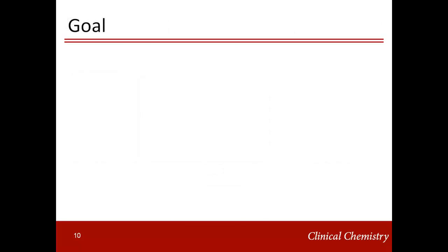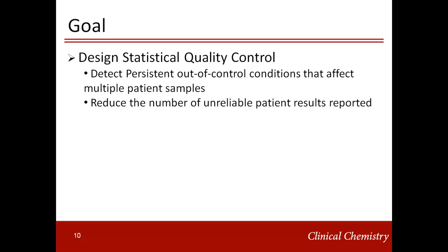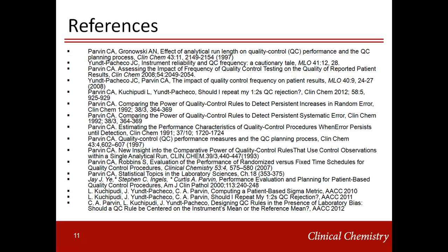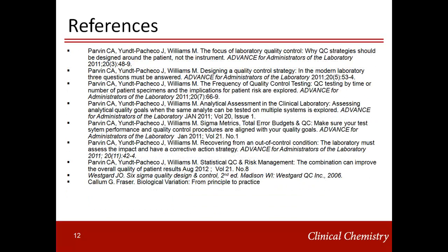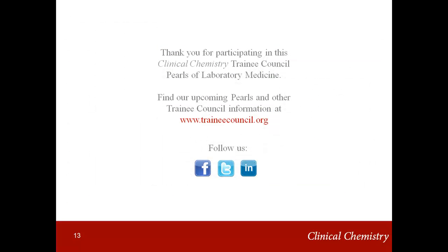Our goal in subsequent pearls is to learn to design statistical quality control to detect persistent out-of-control conditions that affect multiple patient results and reduce the number of unreliable patient results reported. Our main focus will be to minimize patient risk. Here are the references for all the articles used in this series. Thank you for joining me on this Pearl of Laboratory Medicine on Why Do We Need Quality Control from the QC Design Things You Need to Know series. I am Lakshmi Kuchipuri.